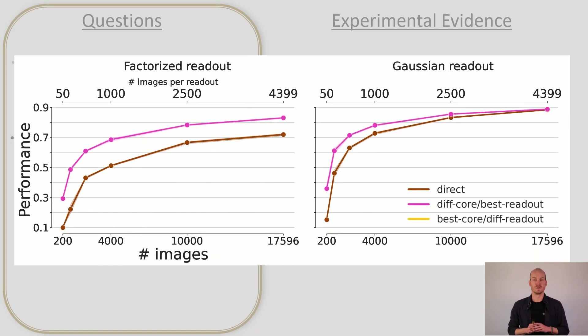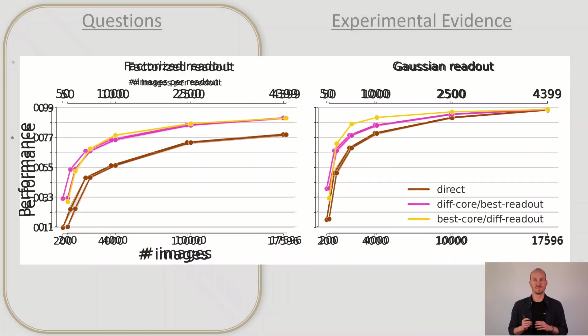If we compare that now to a setup where the core is always trained on the full data but the readout only has different amounts of data we see this. Now I want to guide your attention to this gap in the Gaussian readout which is not present in the factorized readout. It means that even if the readout has all data it can have, it will never overtake the experiment where the core is trained on all data. That means that we have successfully pushed the computations to the core and achieved generalizing features.